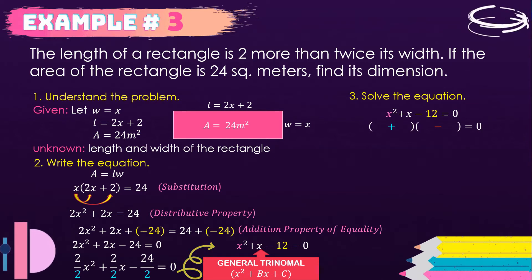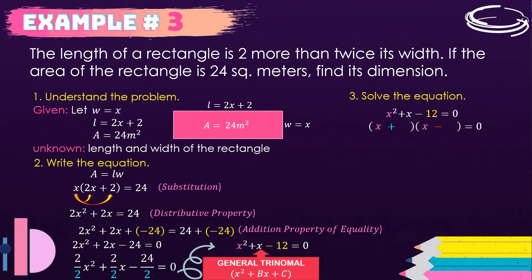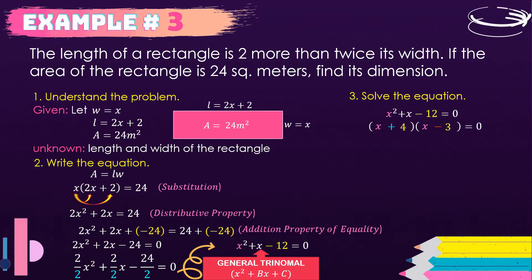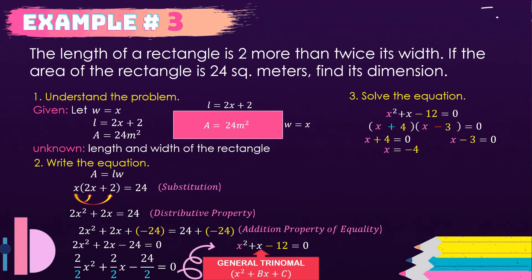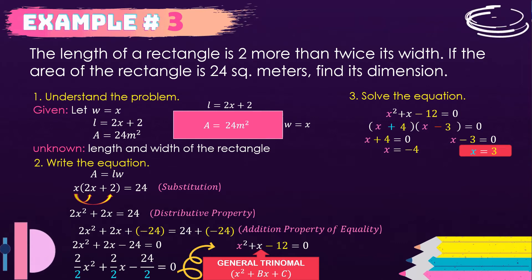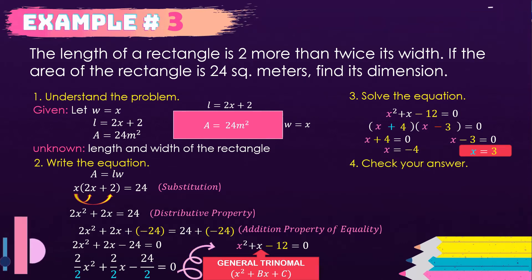Third, we solve x² + x − 12 = 0, which is the product of two binomials. Since the constant term is negative, we have a plus and minus. Factoring x² gives x·x, and factoring −12, we need two numbers whose sum is +1: those are +4 and −3. Equating each factor to zero: x + 4 = 0 gives x = −4, and x − 3 = 0 gives x = 3. We discard the negative, so x = 3.